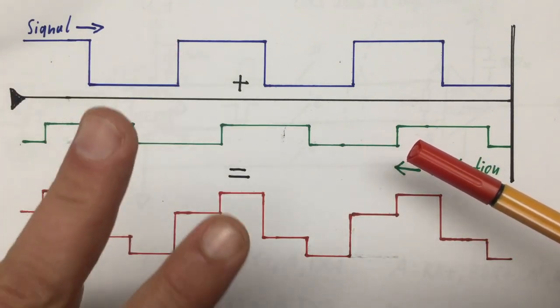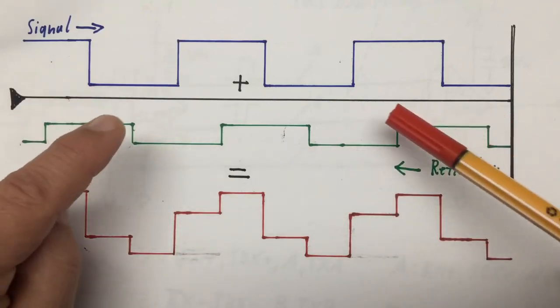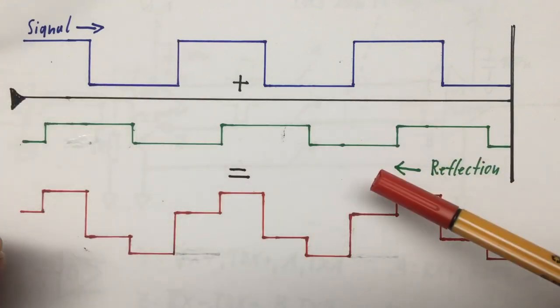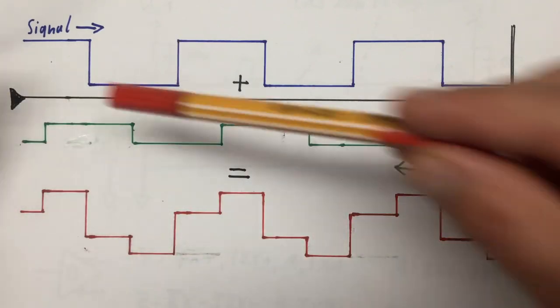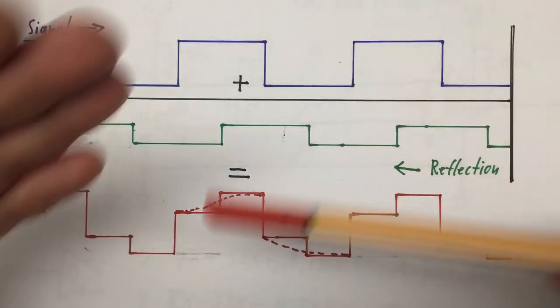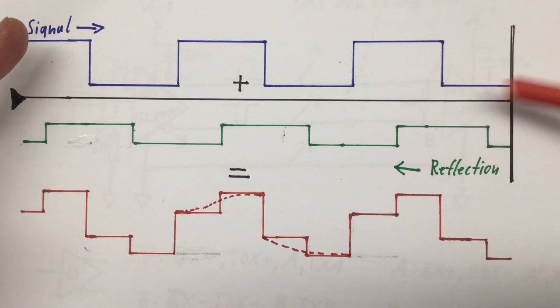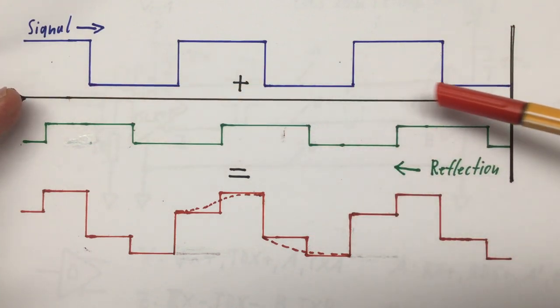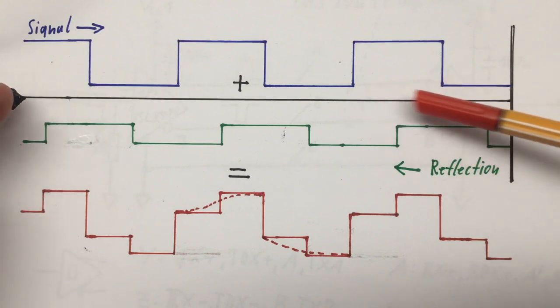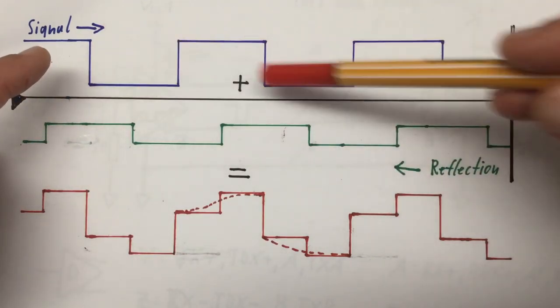To explain that, we just ignore for the moment that we have actually two signal lines with a differential signal on them, because this phenomenon is not specific to differential signaling. It also happens if you only have one signal line or a coax cable. We also have to treat our signal now as an electromagnetic wave traveling down our transmission line from the transmitter to the receiver.